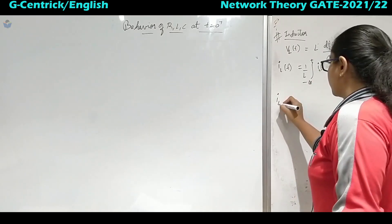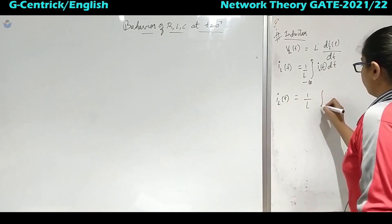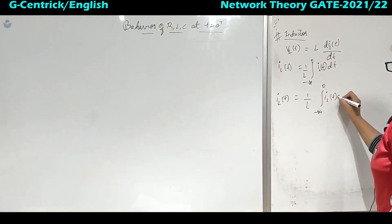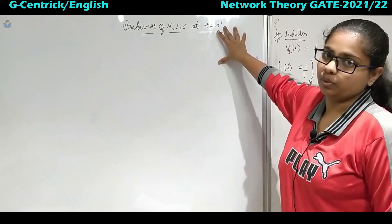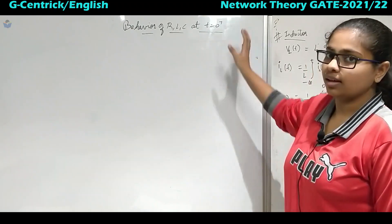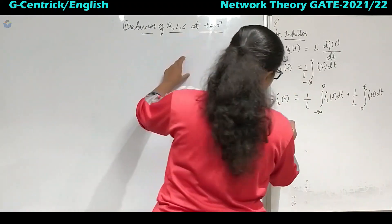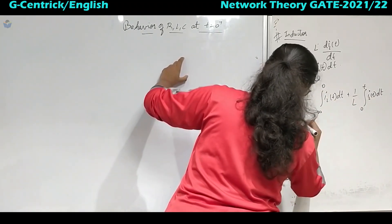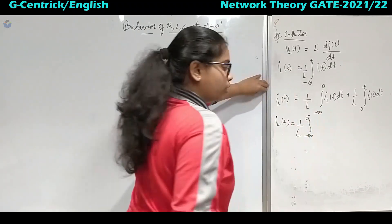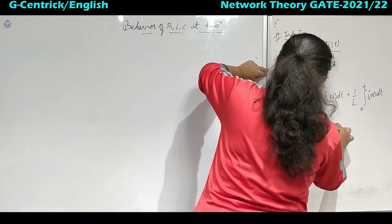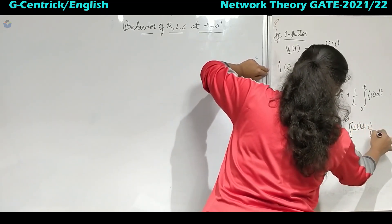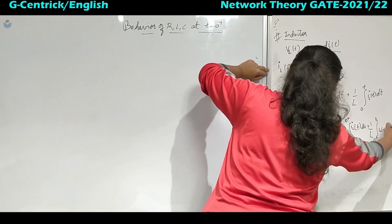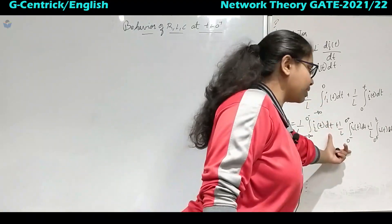We can split this integral as seen in earlier lectures: from minus infinity to 0, then from 0 to some time t. There is also a transition from 0 minus to 0 plus, so we split it again into: integral from minus infinity to 0 minus, plus integral from 0 minus to 0 plus, plus integral from 0 plus to t.